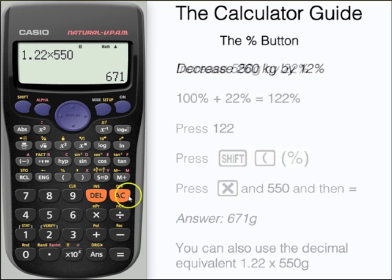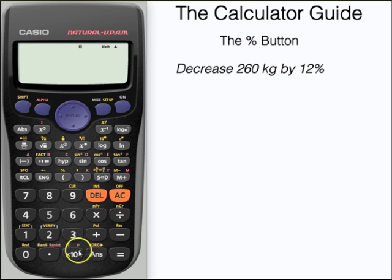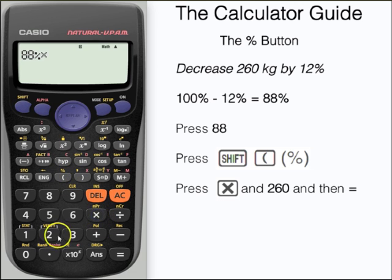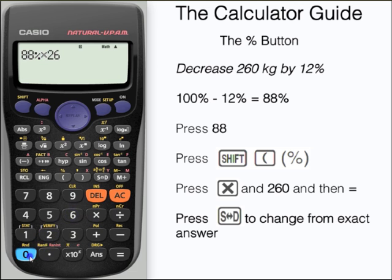We can also decrease by percentages. In this example we're going to decrease 260 by 12%. 260 is 100% or the total amount and we want 12% less or 88%. Press 88 and then shift and the percentage. Then multiply this by 260 and press equals for our answer. The calculator has given us an exact answer, so we need to press the SD button to change it to the decimal equivalent: 228.8.